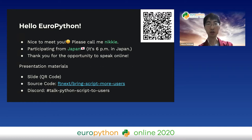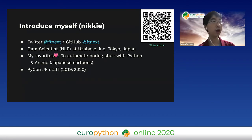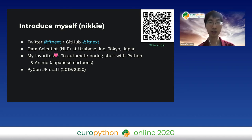Nice to meet you. Please call me Niki - that's my nickname in the Japan Python community. I'm participating from Japan. I use the ID ftnext on Twitter and GitHub. I'm working on natural language processing at User Base in Tokyo.